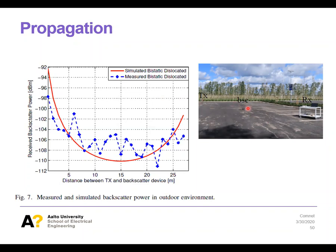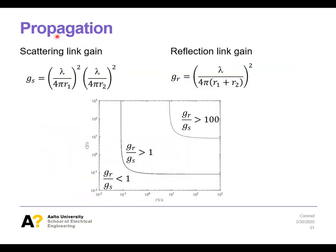People have demonstrated LoRa backscatter at ranges of a hundred to a couple hundred meters, and in the bistatic case even kilometer-scale range in one link when the other link was about one meter. To summarize: in the scattering case you multiply the first link gain by the second link gain. With reflections it is like a single link gain but difficult to achieve in practice because controlling large reflective structures for modulation is non-trivial.